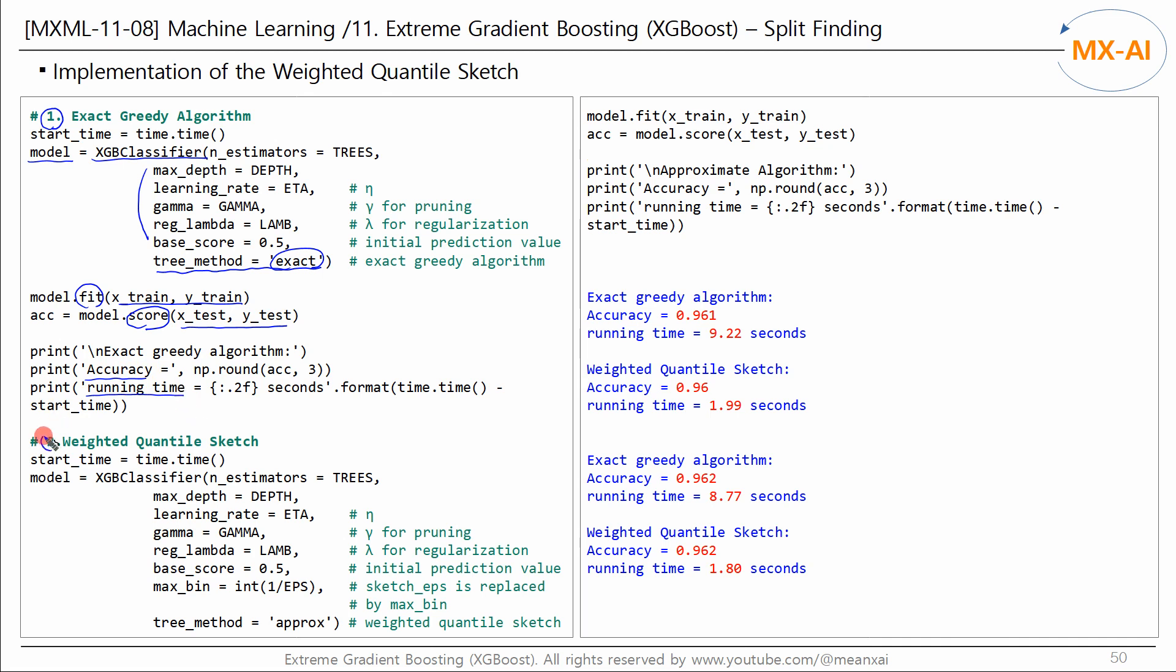Next, let's perform the classification using the weighted quantile sketch algorithm. Create a model with the XGB classifier and set the max_bin in the tree_method parameters like this. The max_bin means the number of buckets. Set this to 1 over epsilon. If the tree_method is set to hist, the max_bin means the number of bins in the histogram. We then fit this model to the training data and measure the accuracy by predicting the class of the test data. And we check the accuracy and running time.